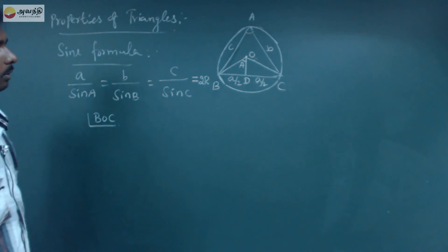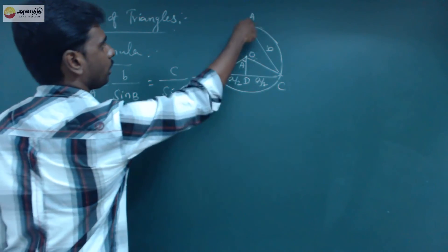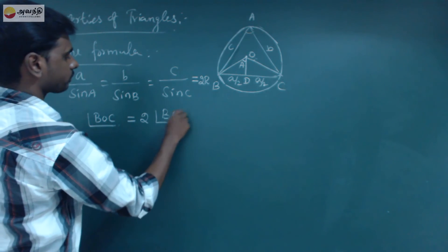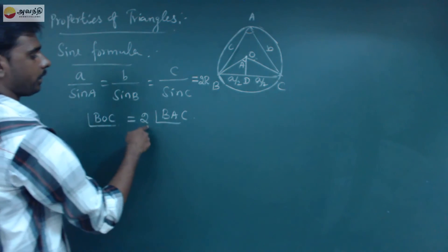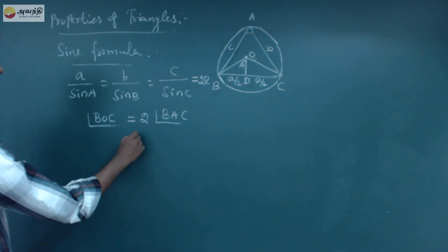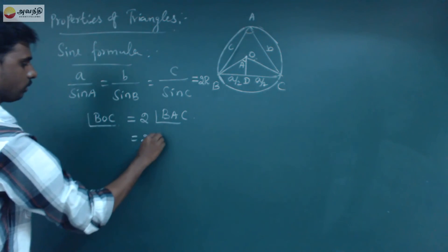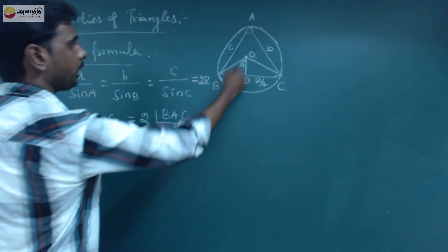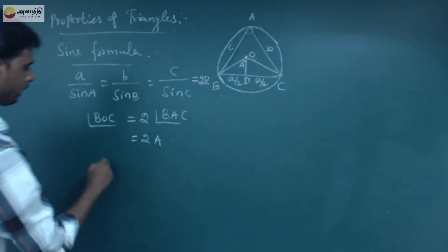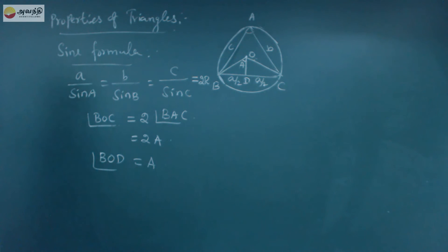Let's do this concept. In triangle BOC, if you take the angle BOC, it is equal to twice the inscribed angle — that is 2A, where A is the angle at vertex A. Taking triangle BOD, the angle at O is equal to A. Now let's find out: a/sinA = 2R — let's prove this.